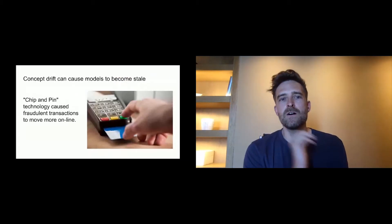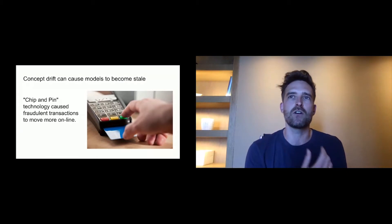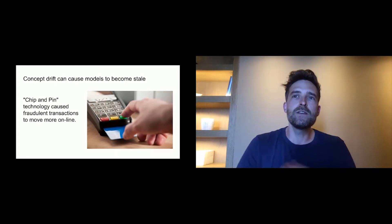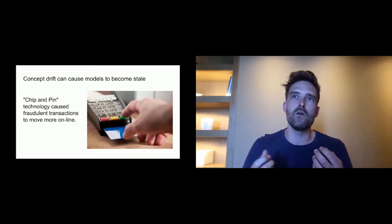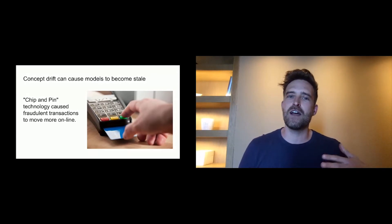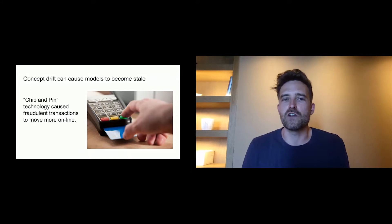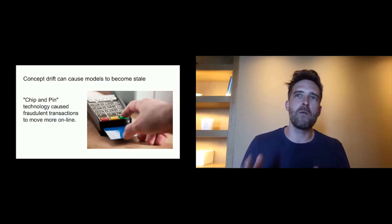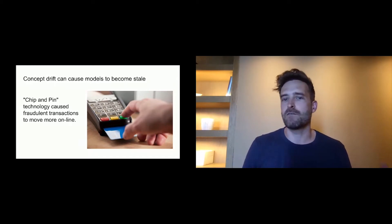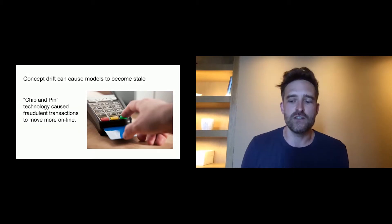In concept drift, the underlying assumptions of your model have changed. This is really common when your model is trying to learn adversarial or competitive behavior, like a fraud detection model or spam filters. You've trained on data in one scenario, and the adversaries have learned to evade that scenario, so your training data inherently changes its characteristics. A good example is a model developed to detect credit card fraud — that model changed a lot once chip and pin technology was introduced, because a lot of credit card fraud moved online.